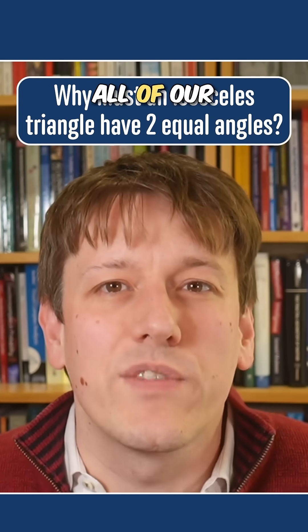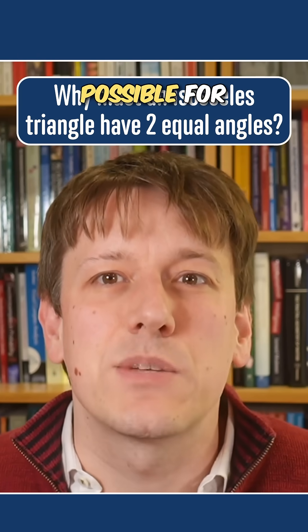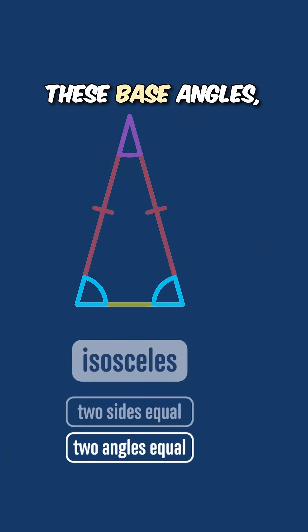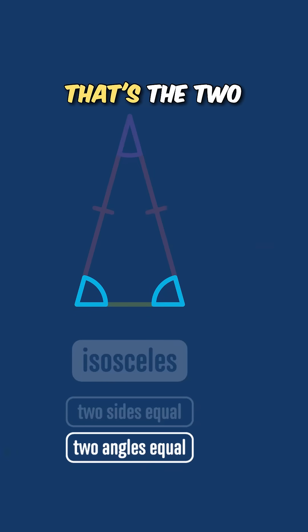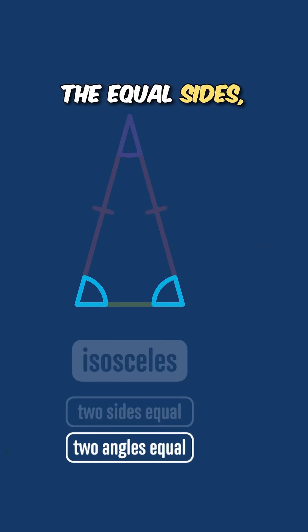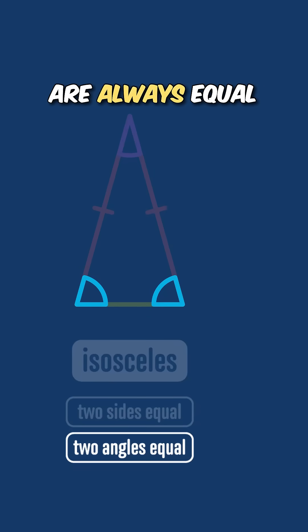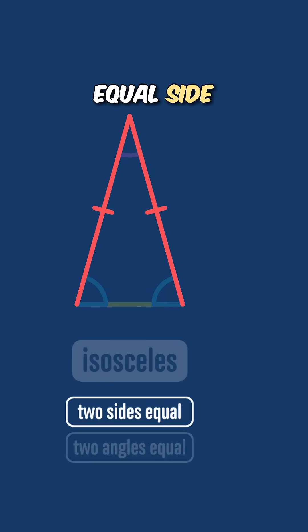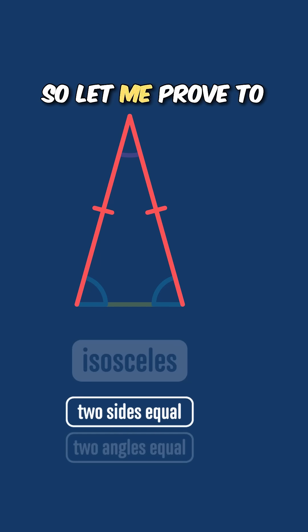The crucial thing that makes all of our calculations possible for isosceles triangles is that the base angles — the two angles opposite the equal sides — are always equal, as well as those equal side lengths. Let me prove to you why that is.